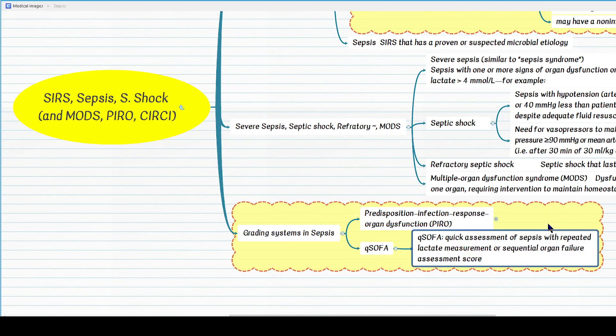However, a more clinically relevant and widely used grading system in sepsis is quick SOFA, that is quick assessment of sepsis with repeated lactate measurement or clinical assessment of organ failure. SOFA stands for sequential organ failure assessment score.